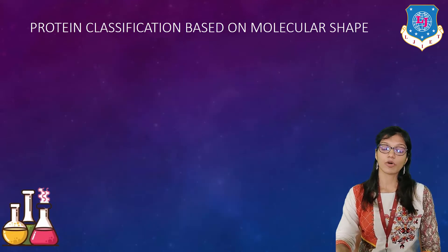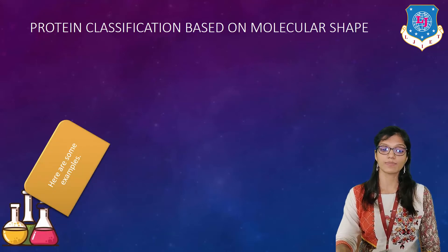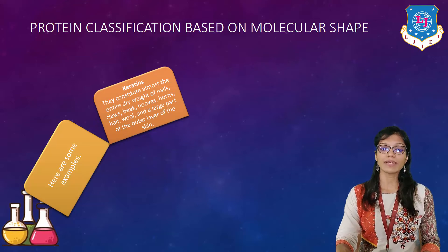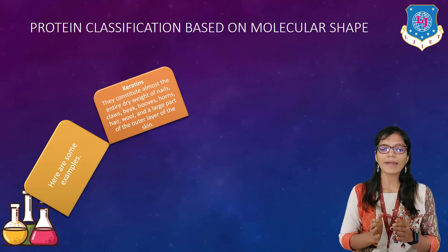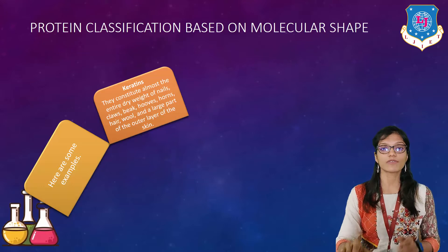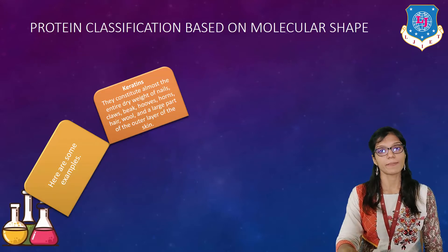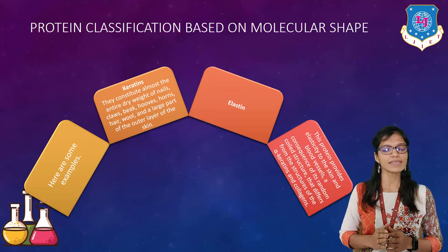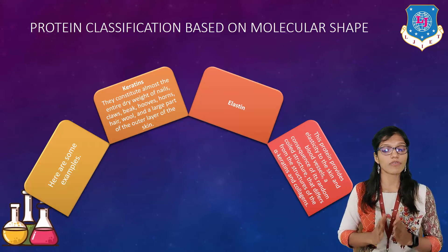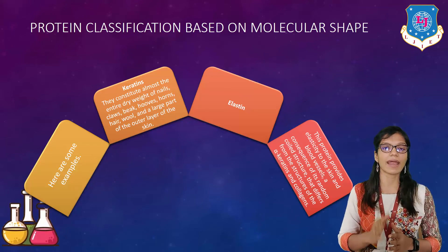Examples of fibrous proteins include keratins, which constitute almost the entire dry weight of nails, claws, beak, hooves, horns, hair, wool, and a large part of the outer layer of the skin. Another example is elastin, which provides elasticity to the skin and blood vessels — a consequence of its random coil structure that differs from the structure of alpha-keratins and collagens.